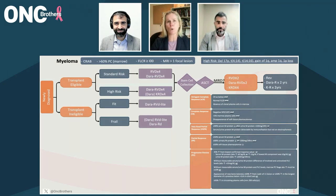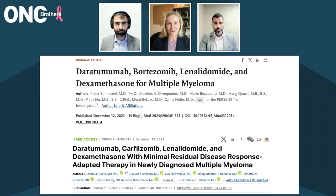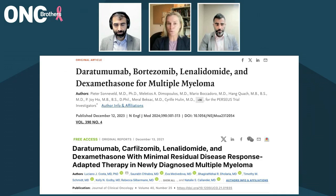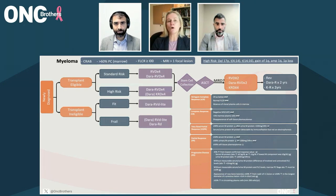Performance status can change dramatically once we get the disease under control, so let that be a dynamic process. If your patient walks in in decent enough shape, young enough, fit enough, without many comorbidities, assume they're going to be transplant eligible. In 2024, the answer is quadruplet therapy. A phase three randomized trial comparing to three drugs, and a phase two comparing four drugs to three drugs, have both shown that four drugs win — incorporating daratumumab, a CD38 monoclonal antibody, into the len-bortezomib-dex triplet. Perseus and Griffin have shown four drugs do better in overall response rate, depth of response, and progression-free survival.